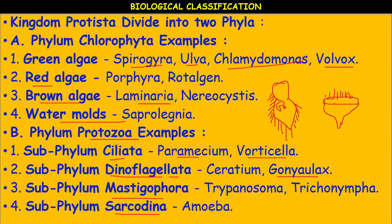The protozoans may be aquatic — some freshwater, some terrestrial — and some are free-living and some are parasitic. Mastigophora includes examples like Trypanosoma and Trichomonas. Subphylum Sarcodina includes Amoeba, which moves with the help of pseudopodia.